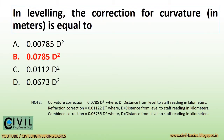In leveling, the correction for curvature in meters is equal to 0.0785 d-square, where d equals distance from level to staff reading in kilometers. Refraction correction equals 0.0675 d-square, where d equals distance from level to staff reading in kilometers.